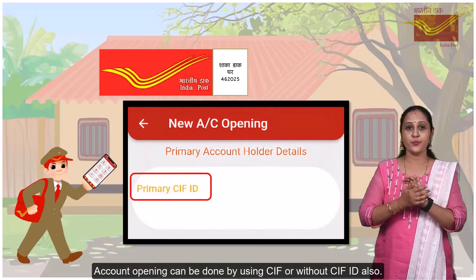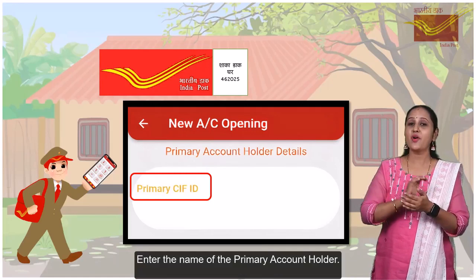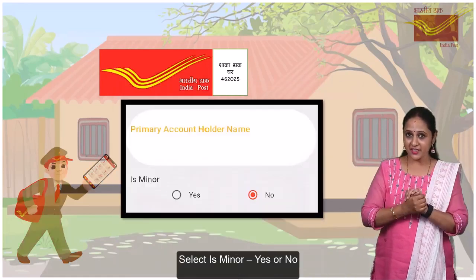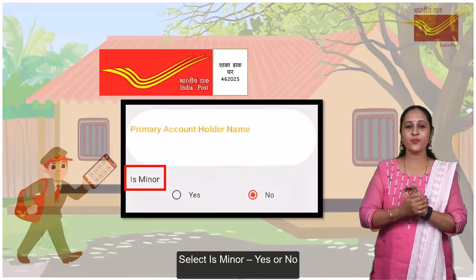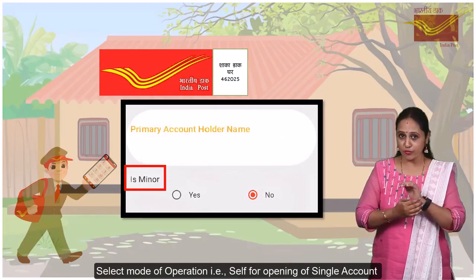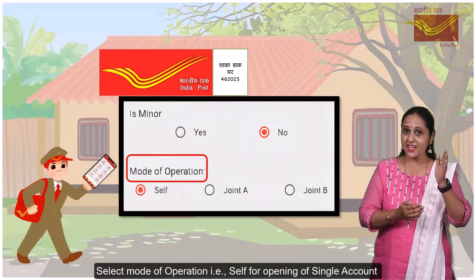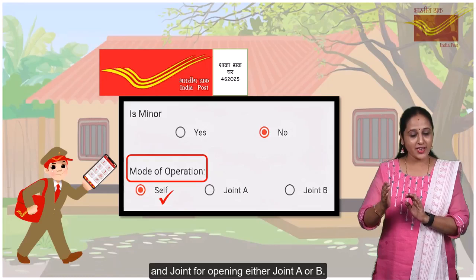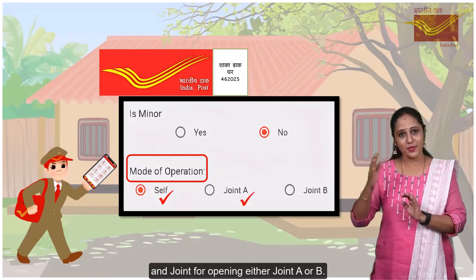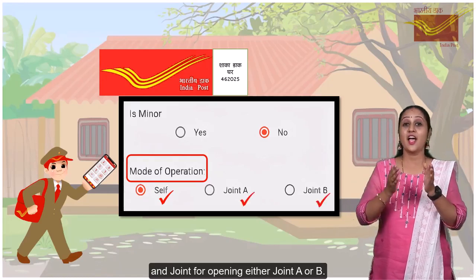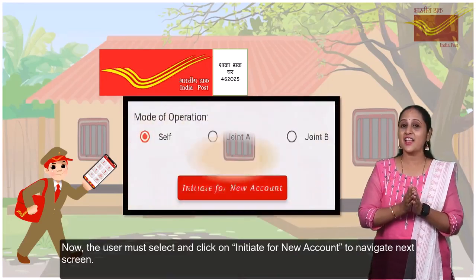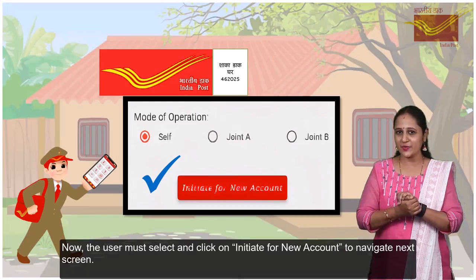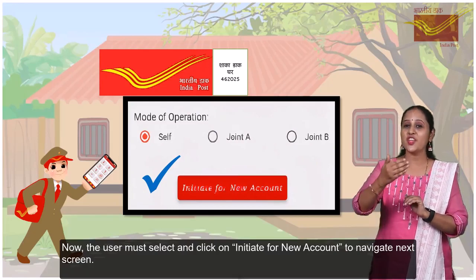Enter the name of the primary account holder, select whether the account holder is a minor or not, and select the mode of operation — that is, 'Self' for opening a single account and 'Joint' for opening either a Joint A or Joint B account. The user must then click on Initiate to navigate to the next screen.